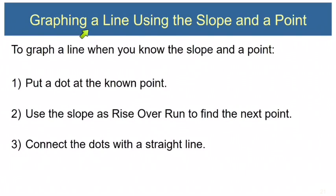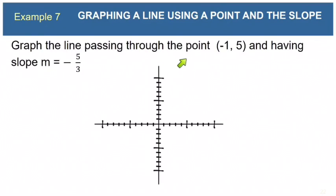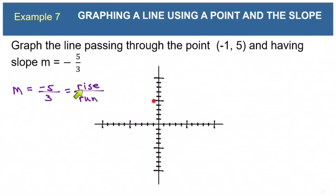To graph a line when you know the slope and a point: put a dot at the known point, then use slope as rise over run to find the next point, and connect the dots with a straight line. Example 7: graph the line through (negative 1, 5) with slope m equals negative five-thirds. Place a point at (negative 1, 5). From that point, go down 5 and right 3 to reach the next point, then connect them.